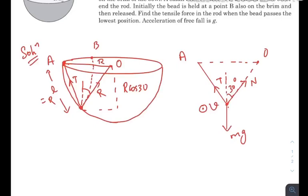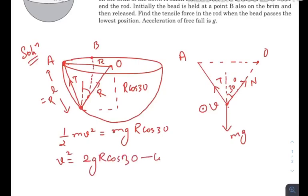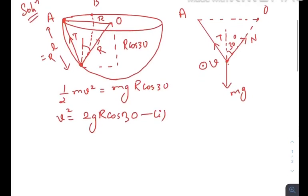First, let me find out the equation of speed using the energy equation. mg R cos 30, so V squared is 2 g R cos 30. Let this be equation number one.